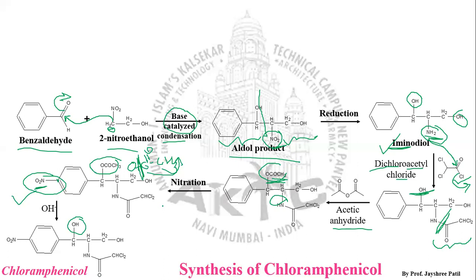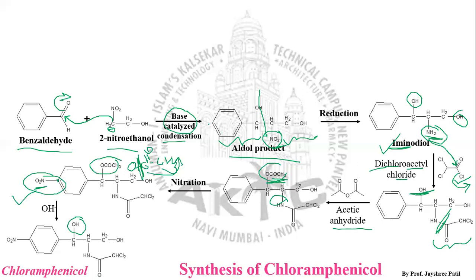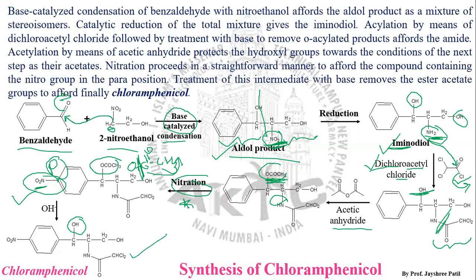In summary, the synthesis of chloramphenicol involves: reaction between benzaldehyde and 2-nitroethanol via base-catalyzed condensation to give the aldol product; reduction of the nitro group to NH2; reaction with dichloroacetyl chloride (acylation); followed by acylation of the hydroxy group with acetic anhydride, protecting both NH and OH; then straightforward nitration at the para position; and finally hydrolysis of the ester to yield chloramphenicol as the target molecule.